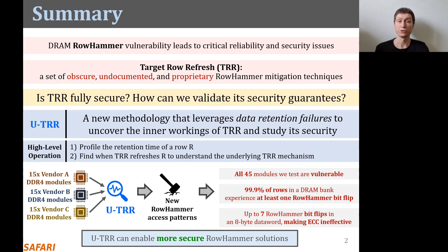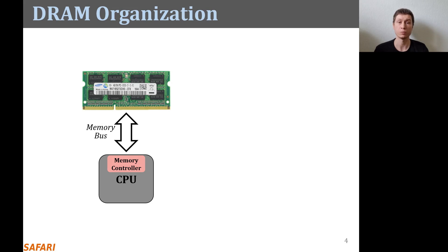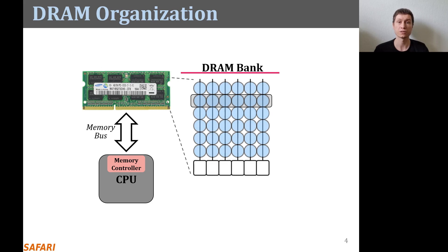This is the outline of today's talk. I will start with describing some DRAM basics. Here, I show a typical system with a CPU and a DRAM module that has several DRAM chips. Inside the DRAM chip, there are multiple banks which contain many DRAM cells organized as a two-dimensional array. A DRAM cell stores a single bit of information as an electrical charge. In a bank, the cells are vertically connected to sense amplifiers, which can read the data from the cells and update it if needed. Cells are organized horizontally as DRAM rows.